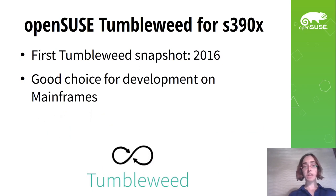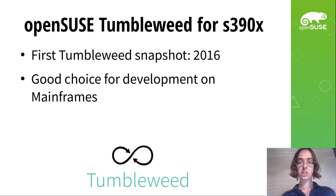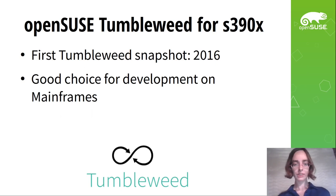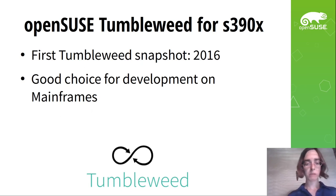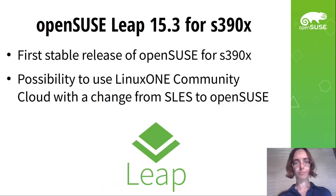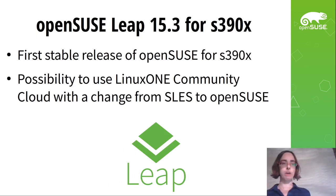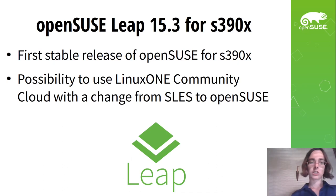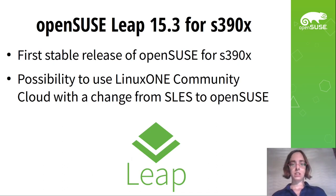OpenSUSE Tumbleweed has existed for S390X since 2016. Berthold Gunreben announced that in the past, and it is a good choice for development on mainframes because of all the latest packages — Tumbleweed is a good choice for development, and we recommend it for the future. Then, since this year, we have our first stable release: OpenSUSE Leap 15.3 for S390X, so you can run servers and everything else with a stable base.